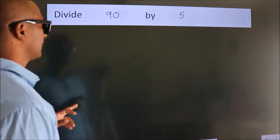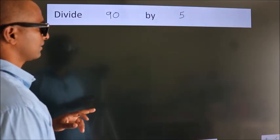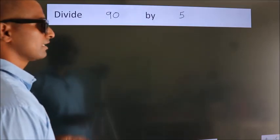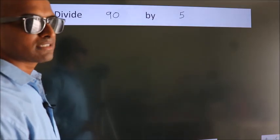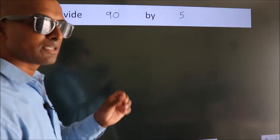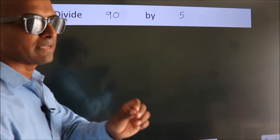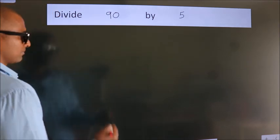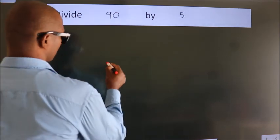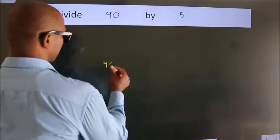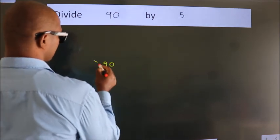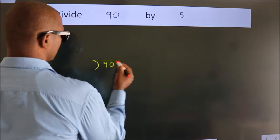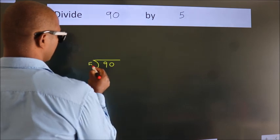Divide 90 by 5. To do this division, we should frame it in this way: 90 here, 5 here.